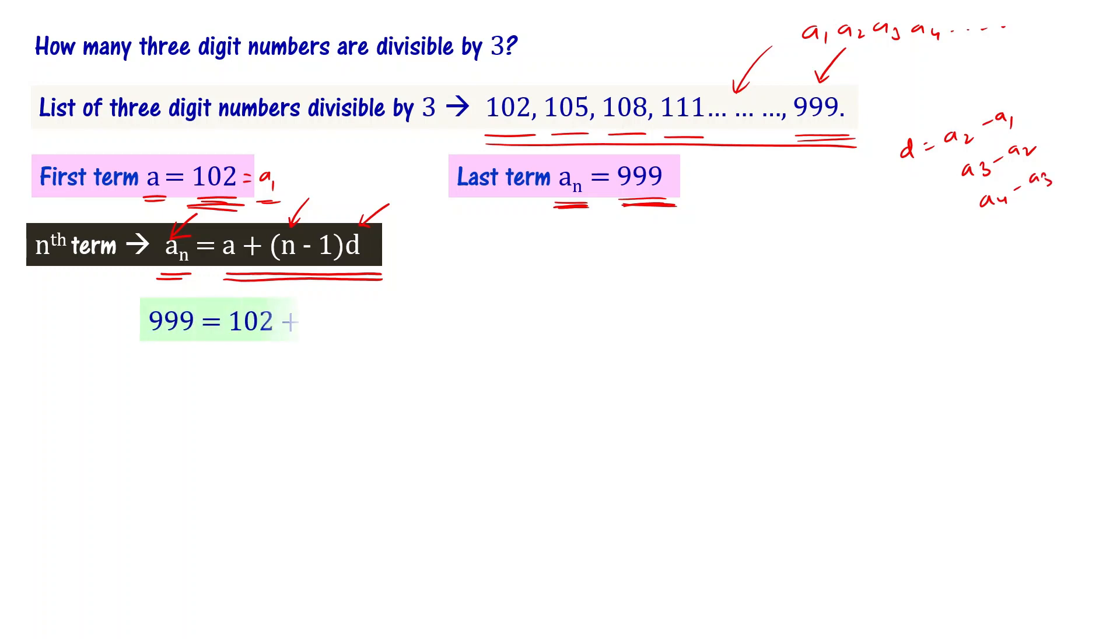This is the common difference. In this particular case the common difference is 3, since 105 minus 102 equals 3, or 108 minus 105 also equals 3.